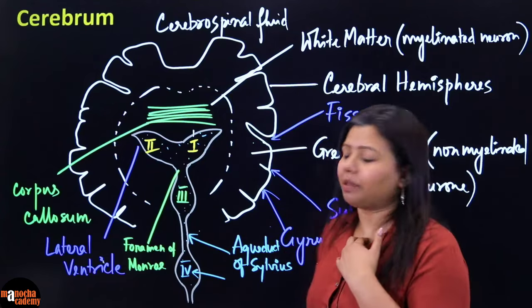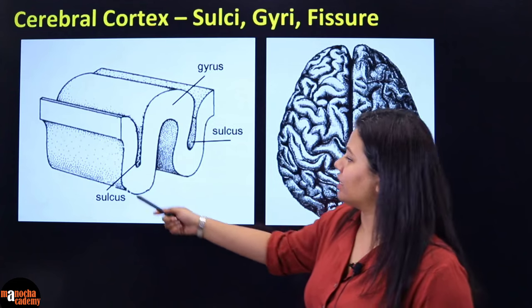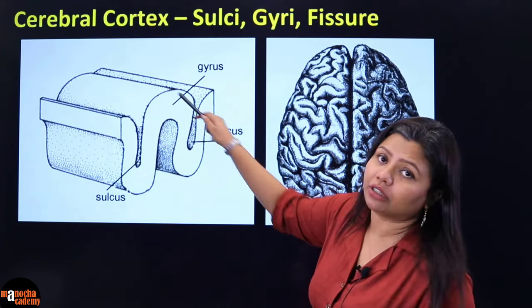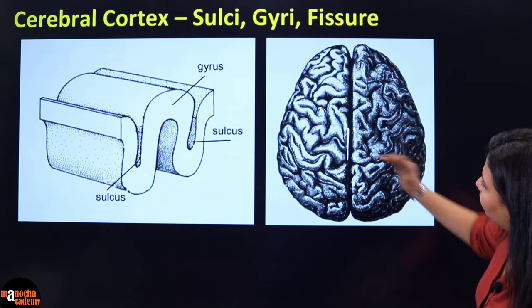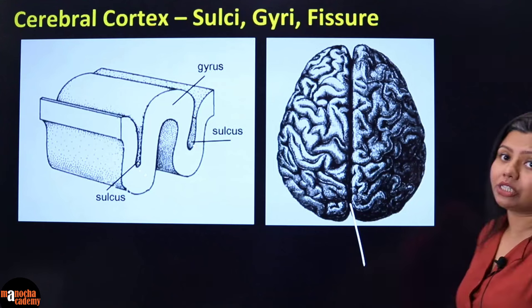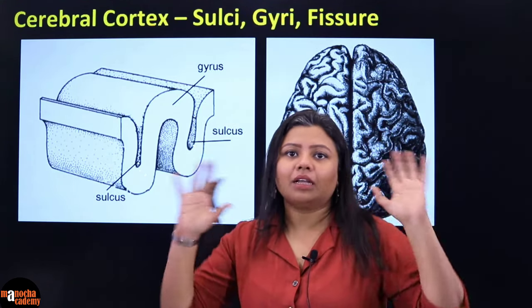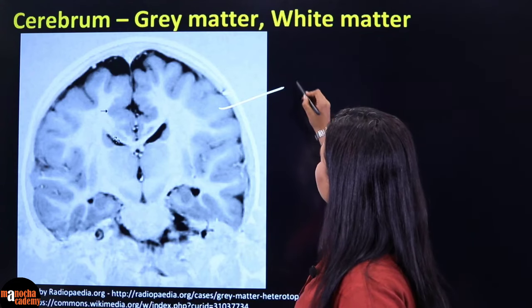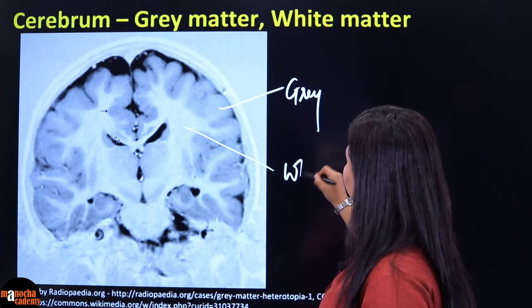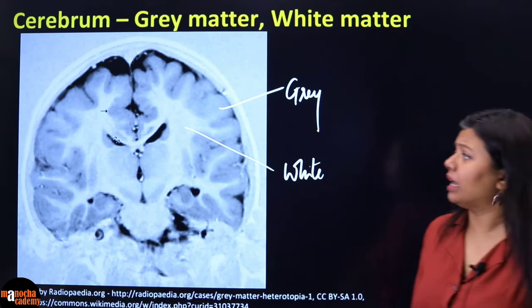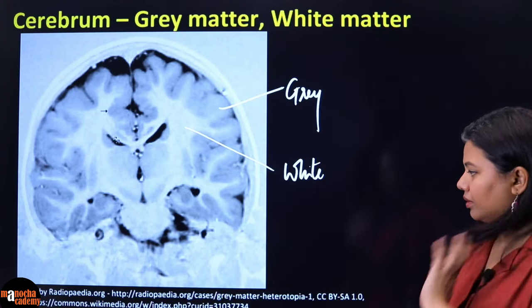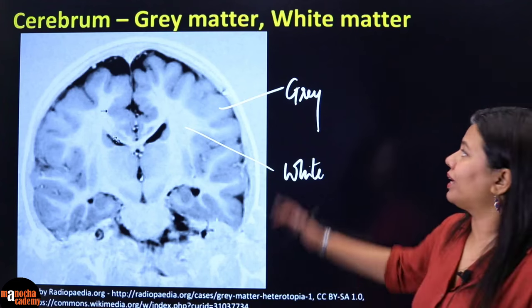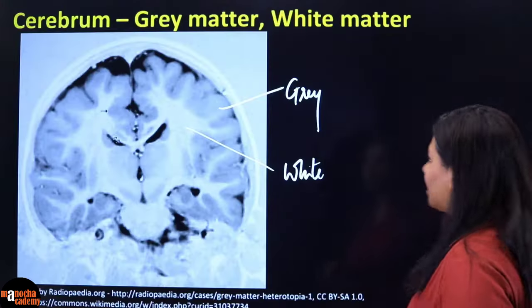Coming back to the structure of the cerebrum — you can see the sulci and gyri present. The shallow groove is known as the sulcus, and in between two sulci there is a convolution known as the gyrus. The deep groove here is the median fissure, which separates the right and left cerebral hemispheres. As I was saying, this is an MRI scan of the cerebrum — as you can see, the outside is made up of grey matter and the inside is whitish in color, made up of white matter. You can see the grey and white matters clearly here.